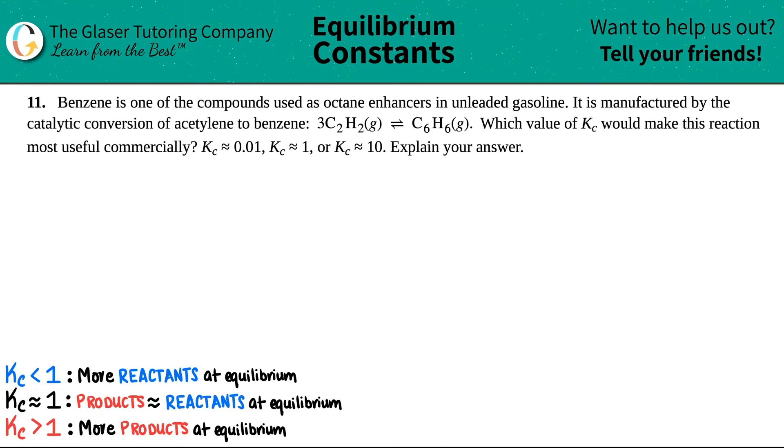Number 11. Benzene is one of the compounds used as octane enhancers in unleaded gasoline. It is manufactured by the catalytic conversion of acetylene to benzene, which is represented by this equation: 3C2H2 gas yields C6H6 gas. Which value of Kc would make this reaction most useful commercially? If Kc was about 0.01, if Kc was roughly 1, or if Kc was about 10? Explain your answer.